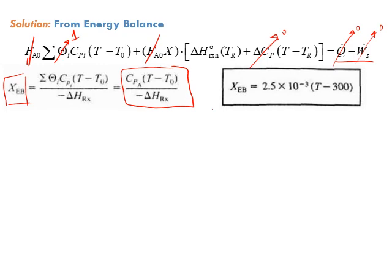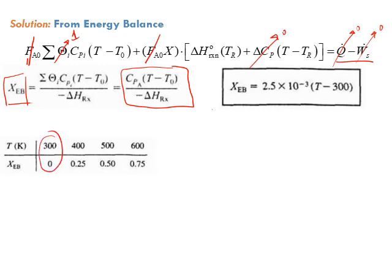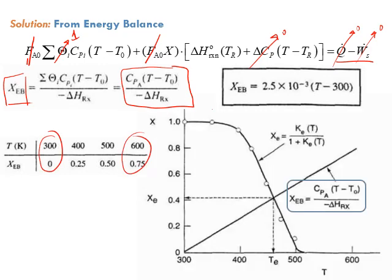Since it's a straight line, we need only two points to plot X_EB versus T. The first point is at T=300 K, which gives X=0. Choosing another point allows us to draw the line on the same plot as the Xe vs T curve. Where the energy balance line intersects the equilibrium conversion curve is the adiabatic equilibrium conversion and the adiabatic equilibrium temperature.